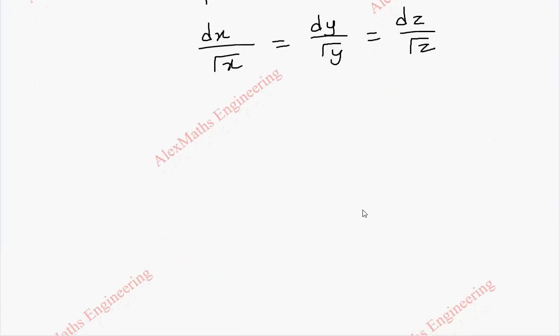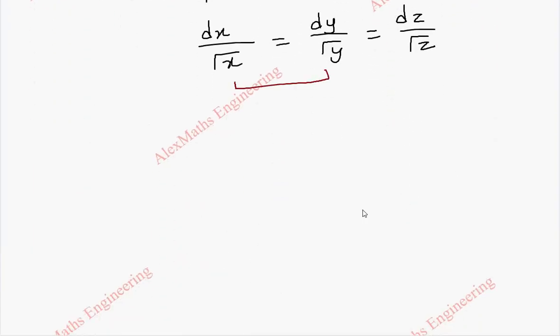Now taking two terms at a time, we are going to get the solution by integration. This is integral dx by root x, this is already in the variable separable form, so we directly integrate. And this is x power half. When we take the numerator, it is x power minus half.